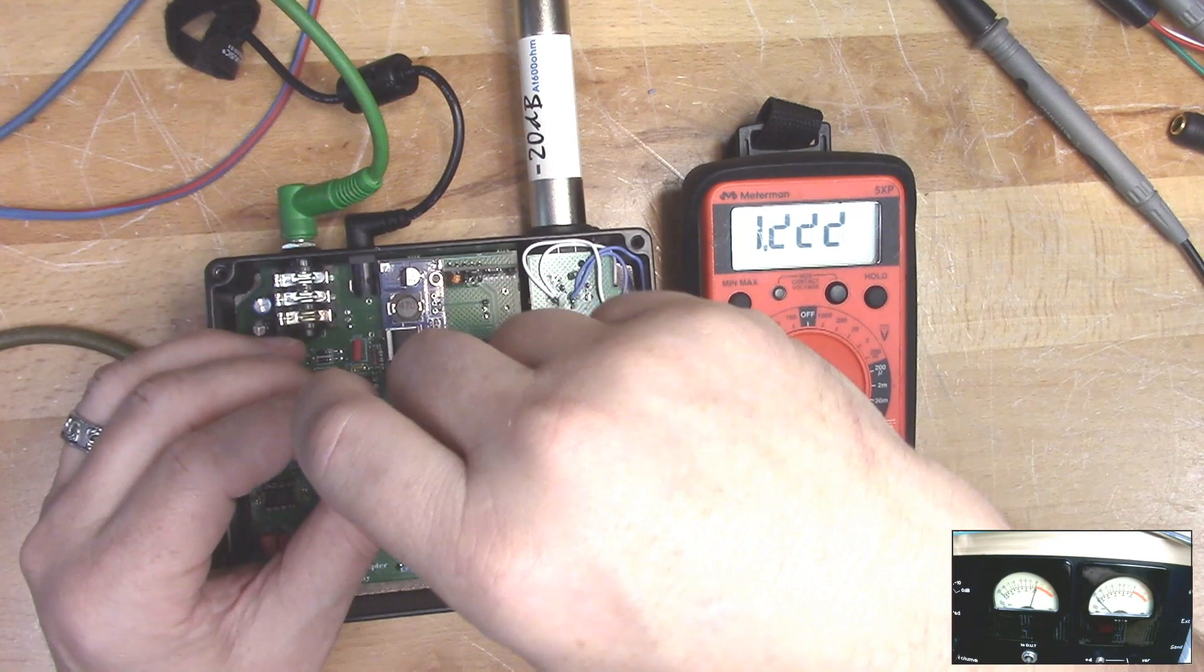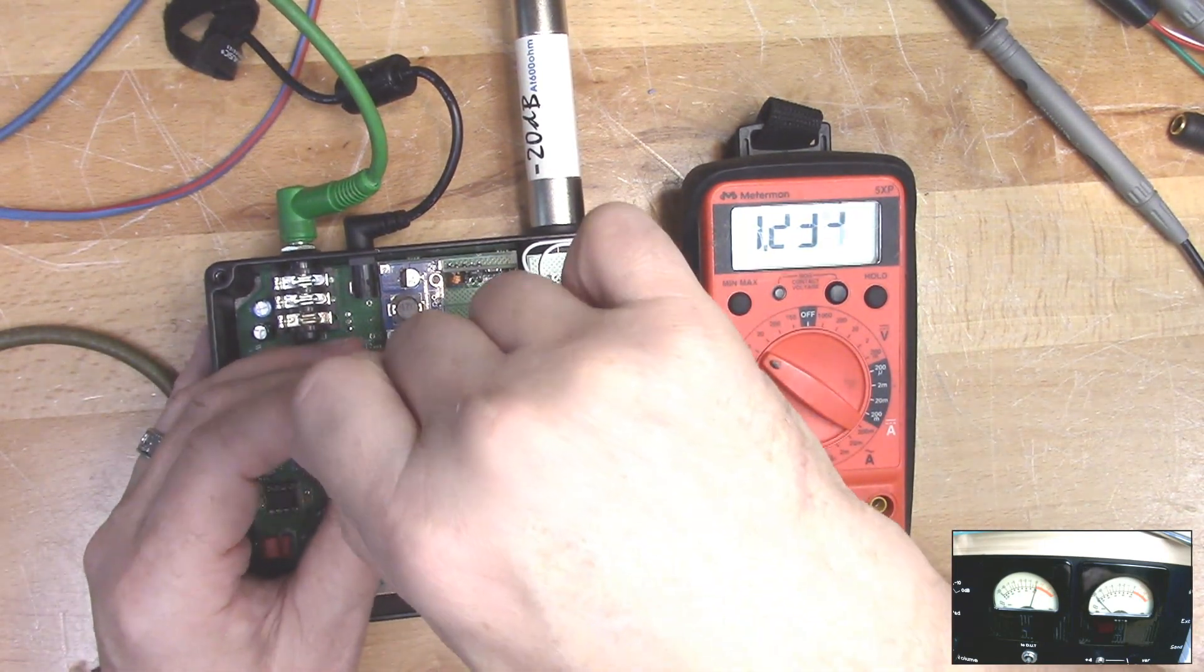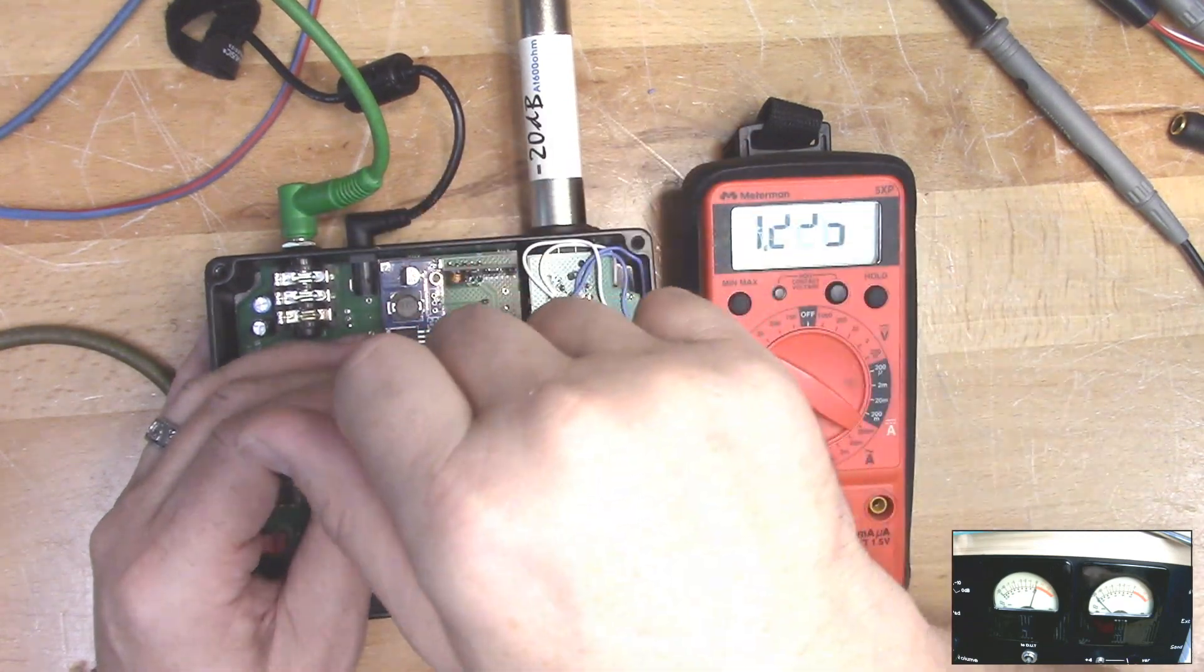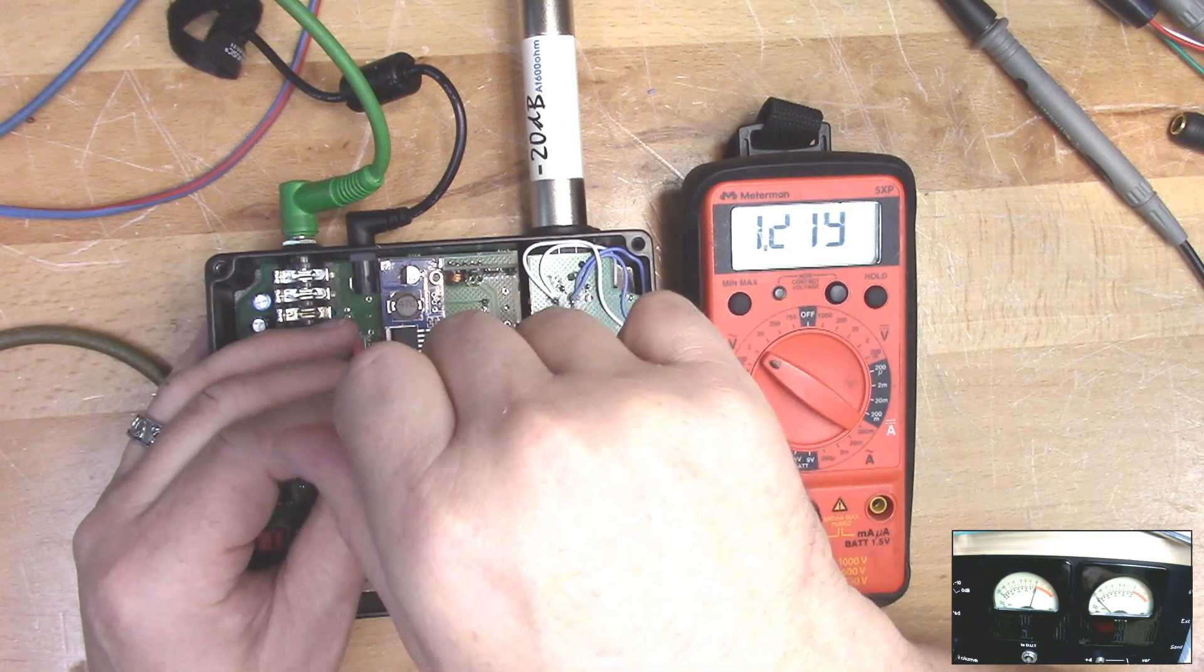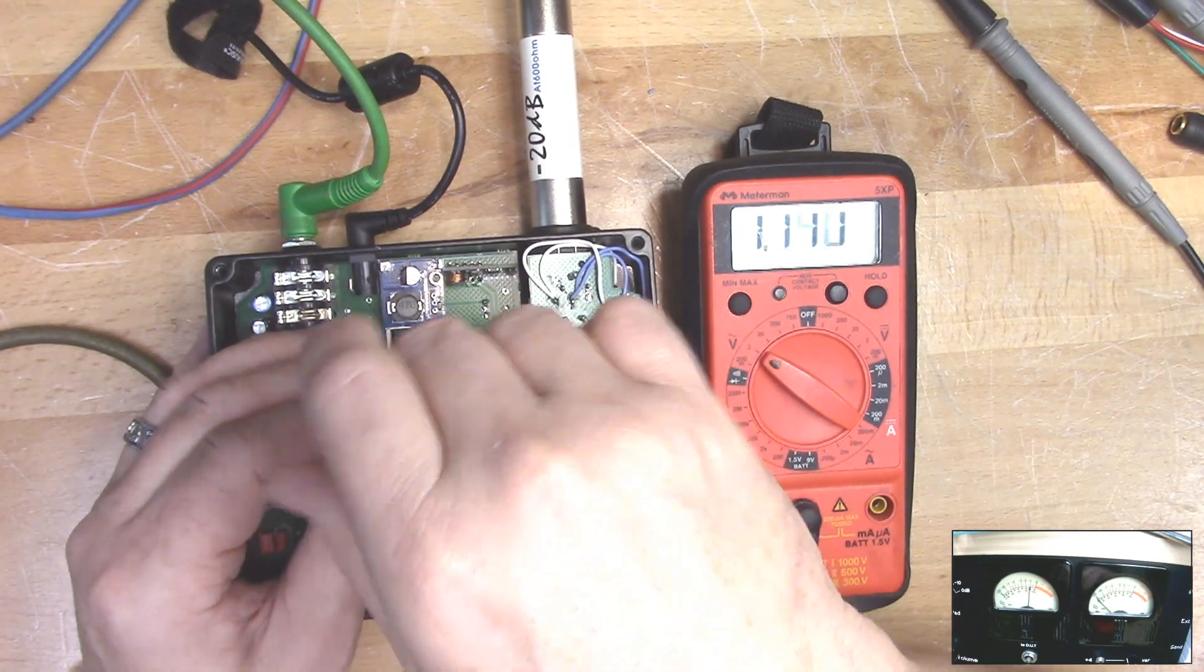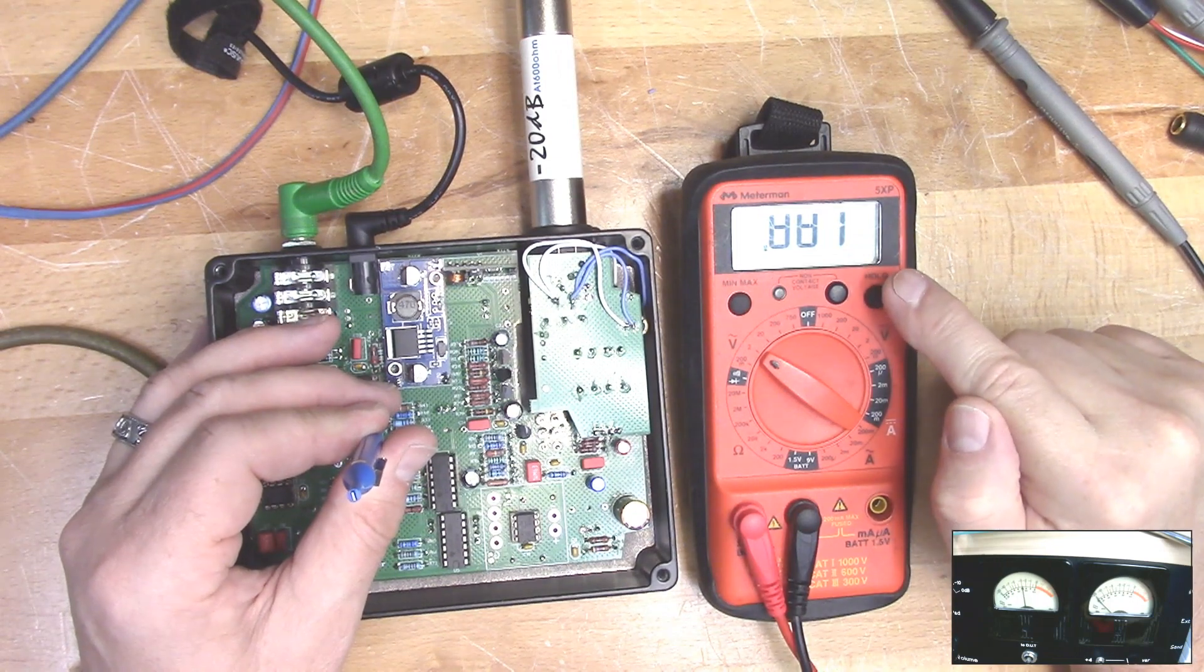You want to adjust this clockwise until the level increases as much as it can. And I've got it all the way clockwise. Now, if I turn it counterclockwise, I should eventually see a reduction in level. And there you see both the VU meter and then the digital multimeter going down.